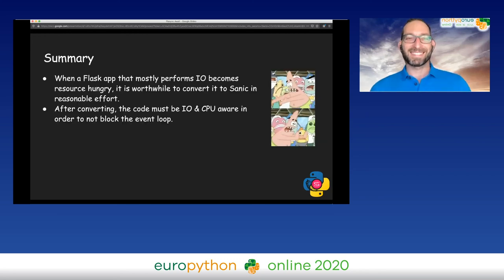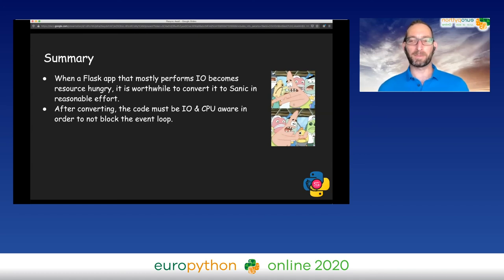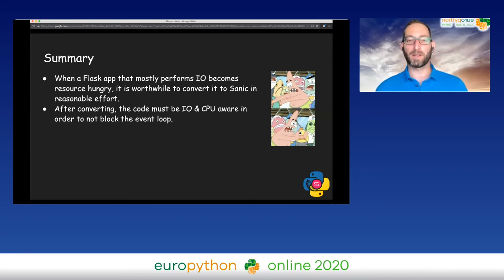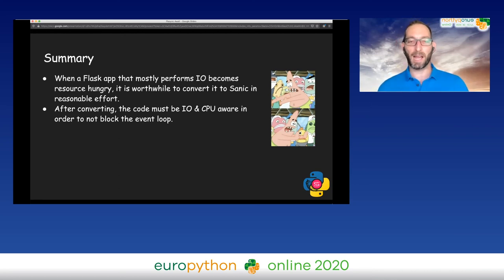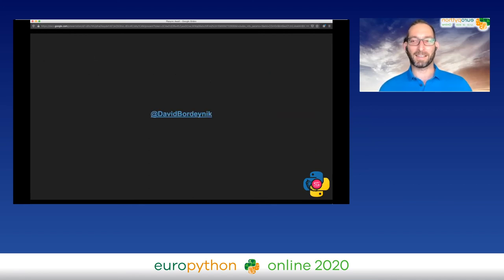So let's conclude. When a Flask application that mostly performs IO becomes resource hungry, it is worthwhile to convert it to a Sanic app and the effort for it is reasonable. But after you convert the app, the code must be IO and CPU aware in order to not block the event loop. That's it. Thank you very much.